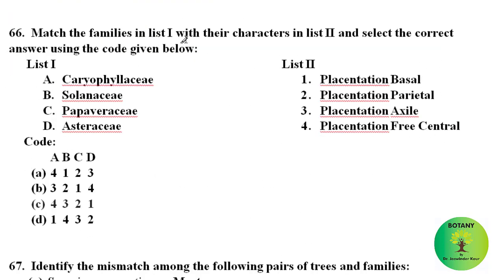Match the families in list 1 with their placentation characters in list 2. In Caryophyllaceae, free central placentation is present. In Solanaceae, axile placentation is present. In Papaveraceae, parietal placentation is present. In Asteraceae, basal placentation is present. The correct answer is option C.